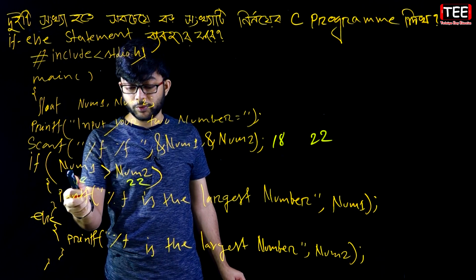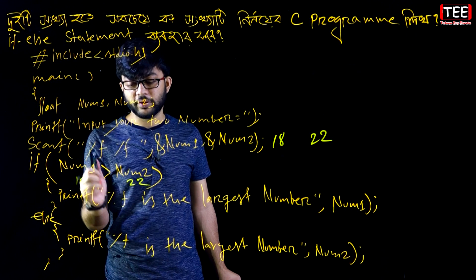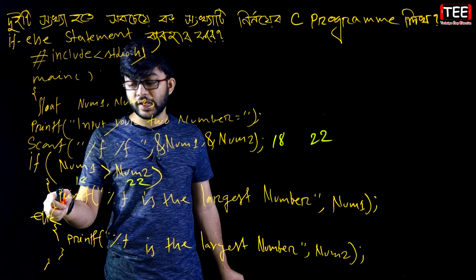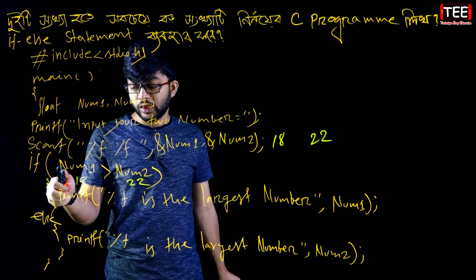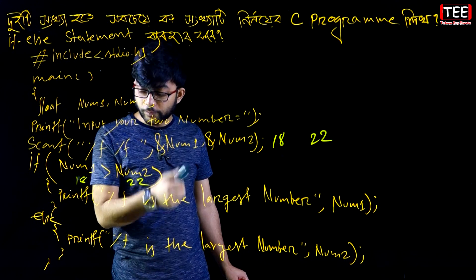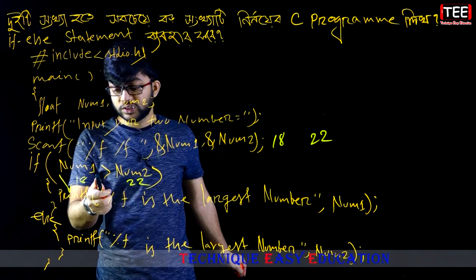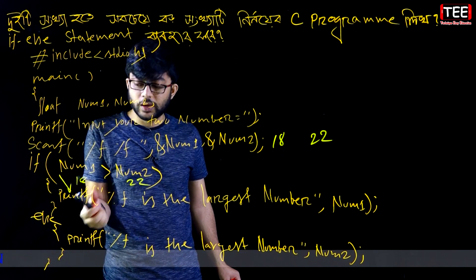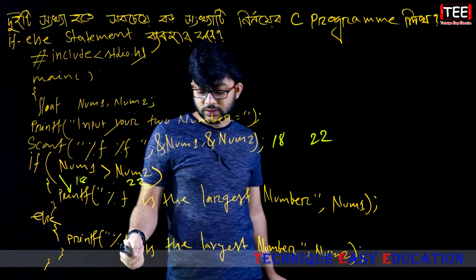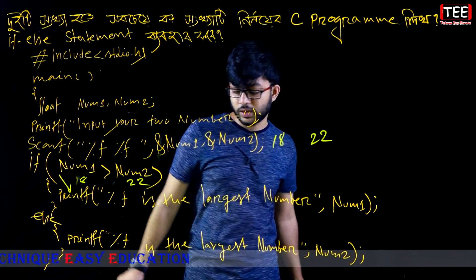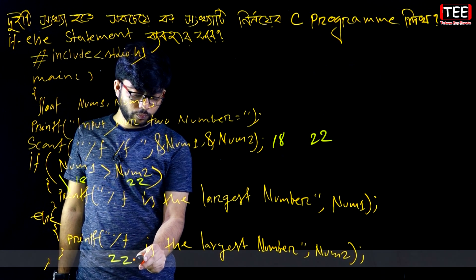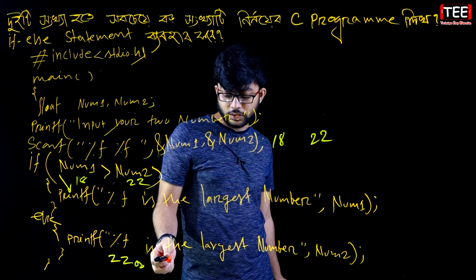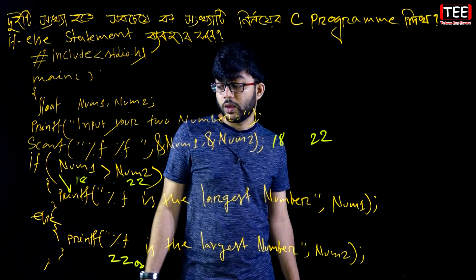You cannot write if — if it is capital, that means it is false. If the value is false, you can't write your if statement. Then if you can execute this value, if the statement output is the best — true is true, and if the statement is false, the result is false. 22.00 is the largest number.